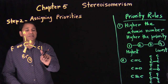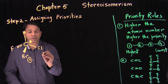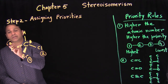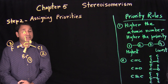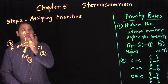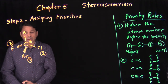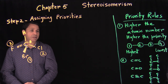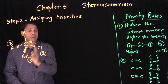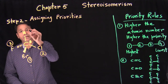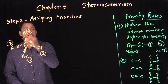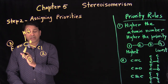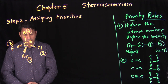Then chlorine has the next highest atomic number, which is 17, so that gets number two priority. Then comes fluorine, so that gets number three priority. Hydrogen is always the lowest priority because it has the least number of protons in the periodic table — you cannot go less than hydrogen — so hydrogen gets fourth priority.